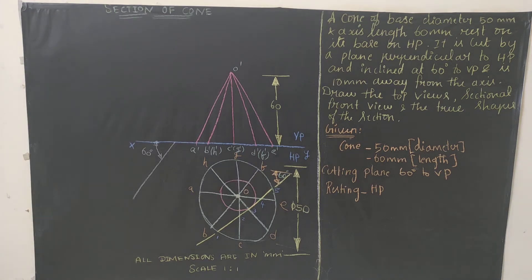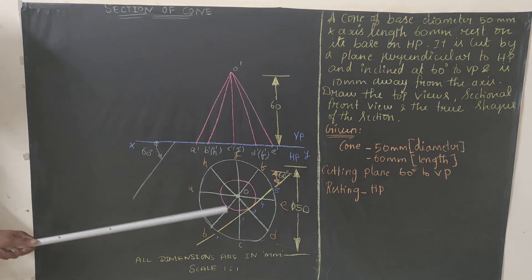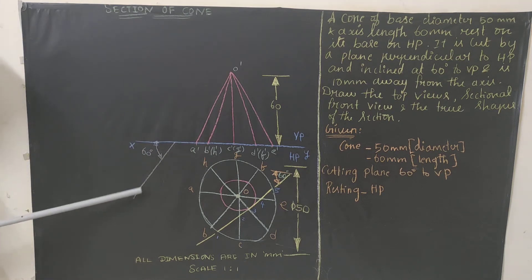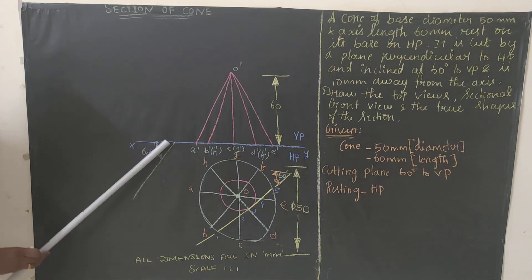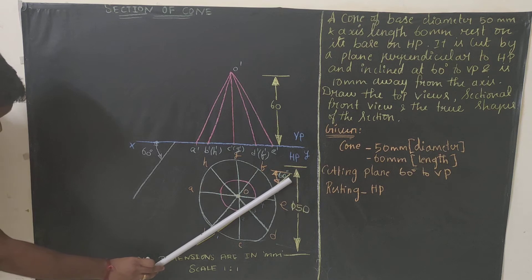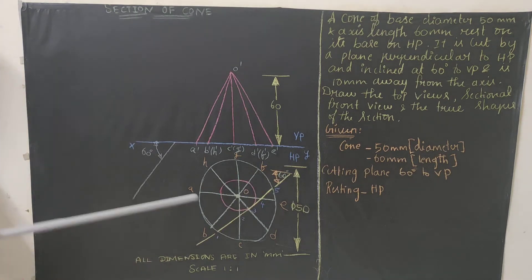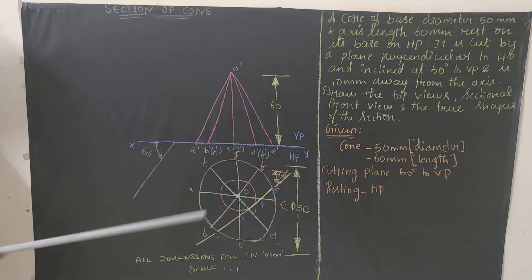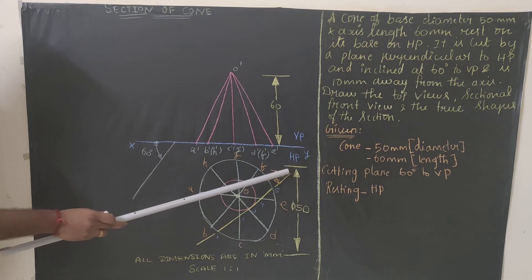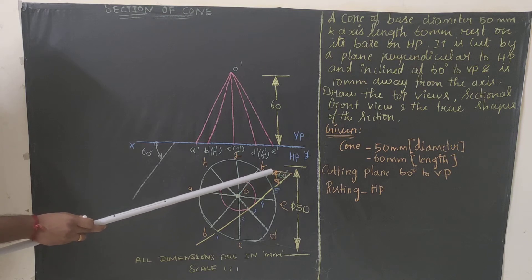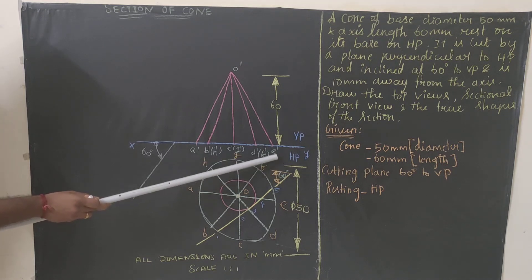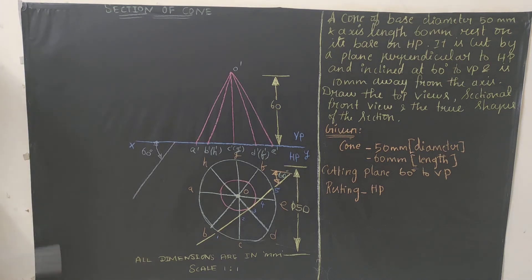The cutting plane line should be inclined at 60 degrees and parallel to your reference incline line. Draw a line anywhere inclined at 60 degrees with respect to the reference line, keep that as reference, and draw the cutting plane parallel to it so it touches the 10 mm circle. Leave a minimum gap, then extend upward, draw an extension line, and mark the 60 degree angle. This line should be parallel to the reference line.